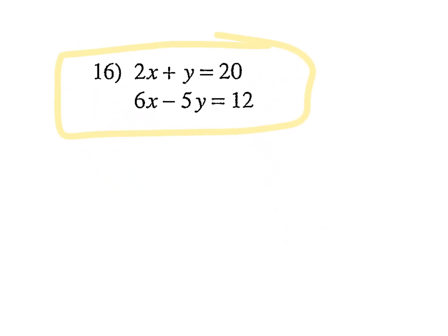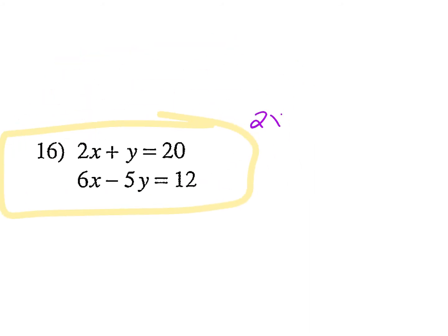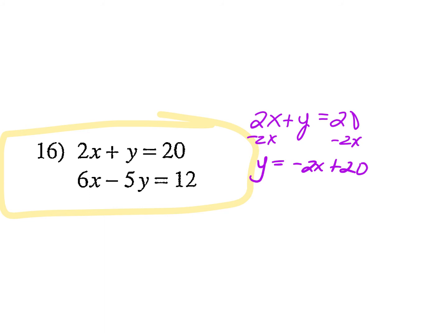Number 16 — what jumps out at you as the easiest thing? The top one, to solve for y. Again, you don't have to solve for the same variable I do. I picked this one because there's no coefficient with y, so I don't have to divide anything out. To get y all by itself, subtract 2x from both sides: y equals negative 2x plus 20.